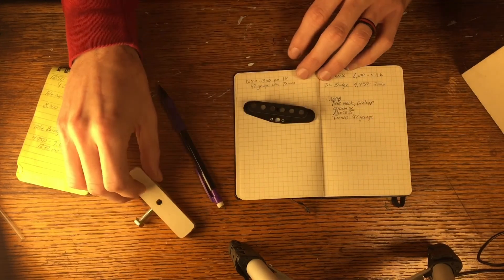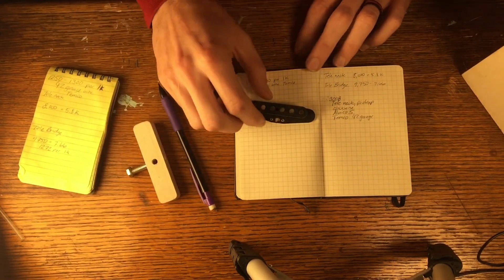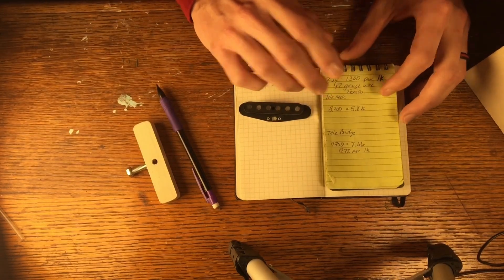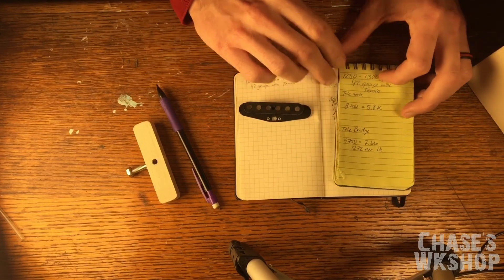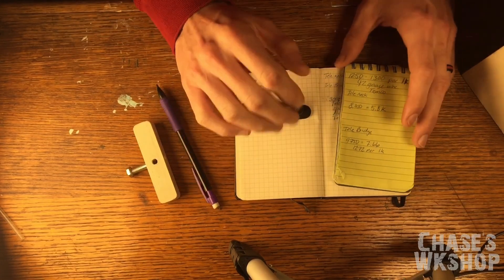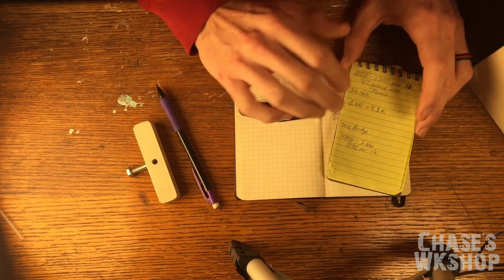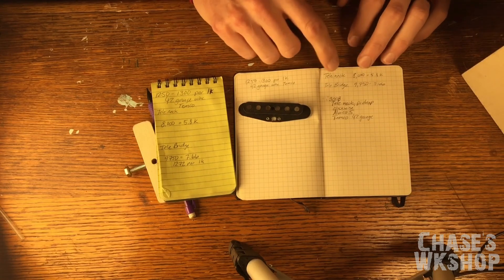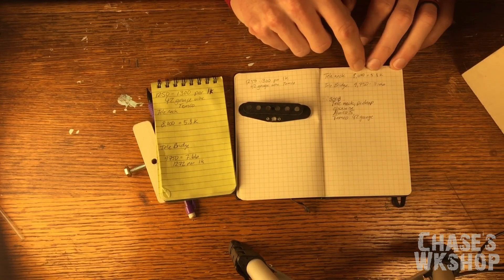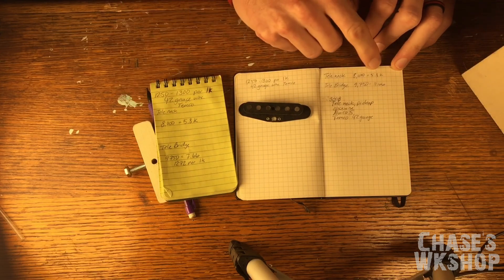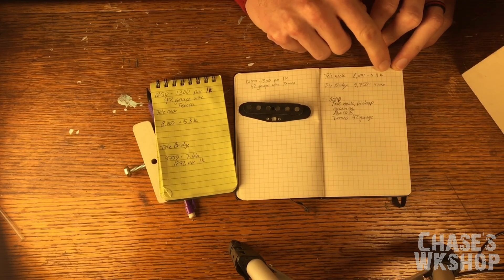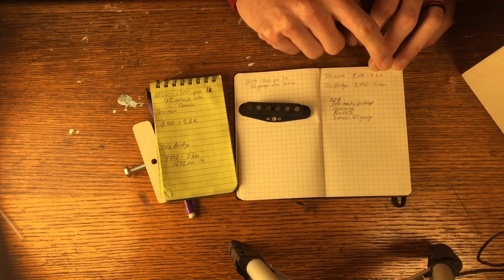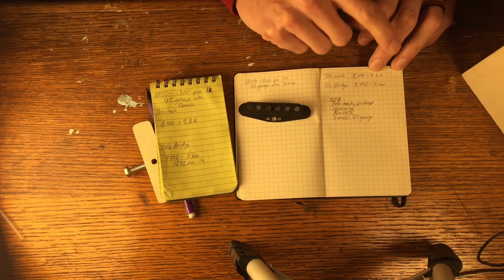Alright guys, before we get to wind the pickup I want to go over the journal that I talked to you about in the first video. This was the one I used when I did the last two pickups, and I've kind of just broke down and got me another book to keep it in a better format. The last two pickups I did: the Tele neck I put 8,000 wraps on it and it gave me a 5.8K resistance. Then when I did my Tele bridge pickup I did 9,750 wraps and that gave me a 7.66K resistance.